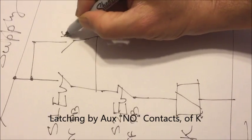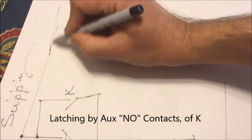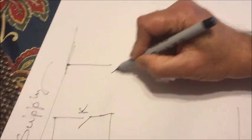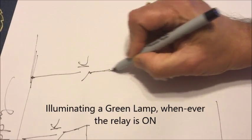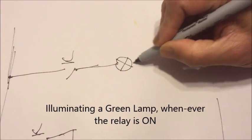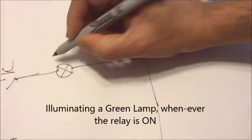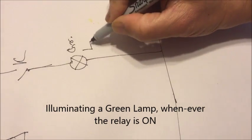Again using its second auxiliary contact of K for energizing the green pilot lamp. Now let's convert the whole thing into a PLC code.